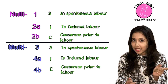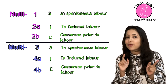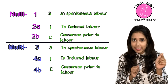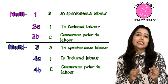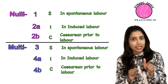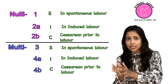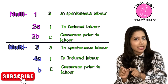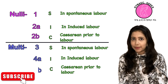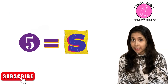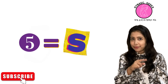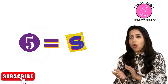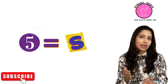To summarize: Groups 1 and 2 are for nulliparous females; Groups 3 and 4 are for multiparous females. Group 1 and Group 3 are spontaneous labour. Groups 2 and 4 cover induced and cesarean-prior-to-labour, split into A and B. Group 5 — the numeral 5 looks like an S for section — covers all women with a previous cesarean section, singleton and cephalic.